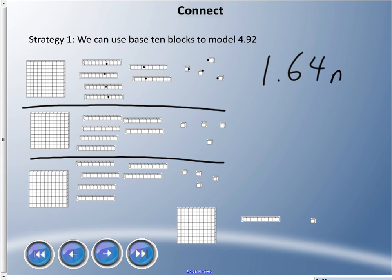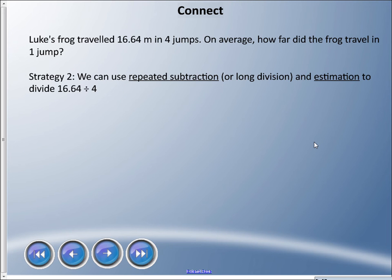Let's talk about strategy number two. Luke's frog traveled 16.64 meters in four jumps. On average, how far did the frog travel in one jump? Now we have one frog jumping four times. I'm going to use something called repeated subtraction. You could use long division, and we're going to use estimation to divide this as well. Let's start with estimation: 16 divided by 4, we know that's going to be around 4 meters.